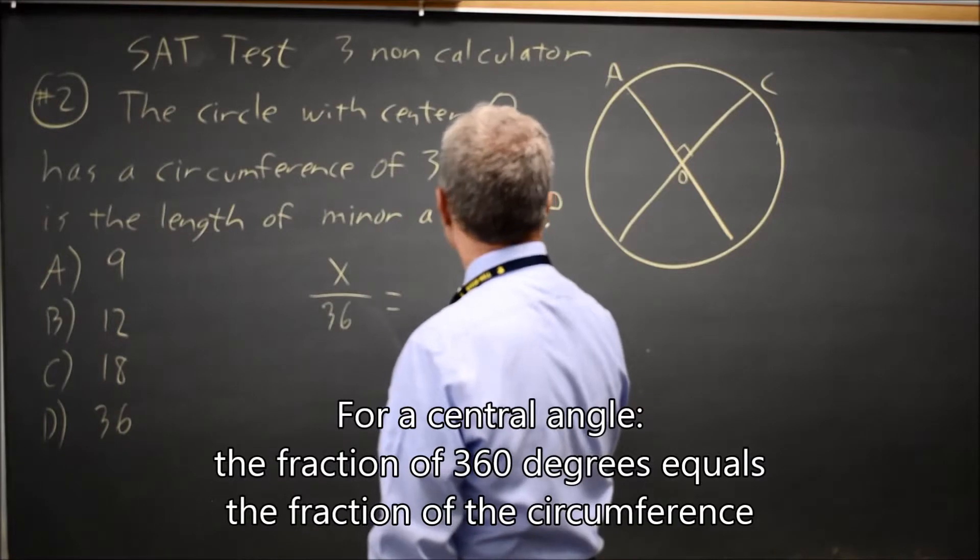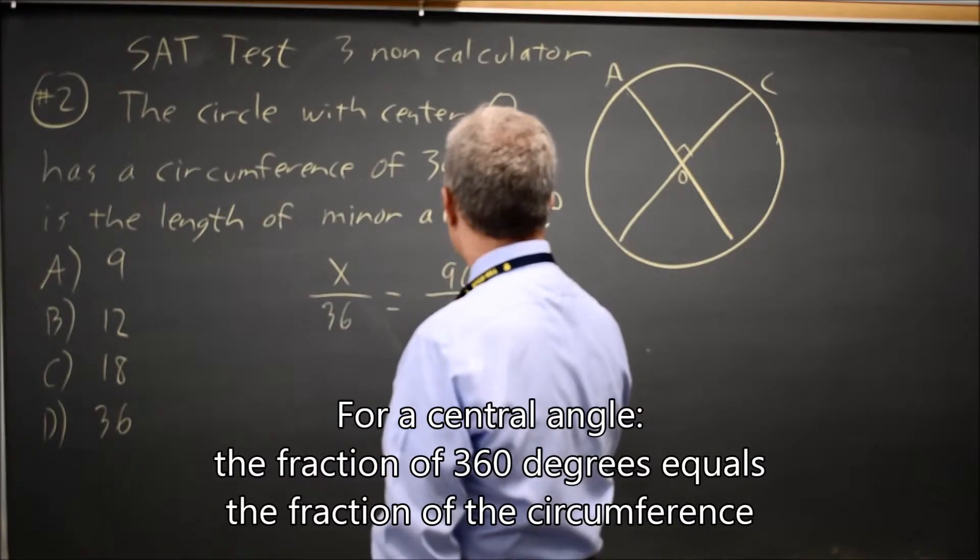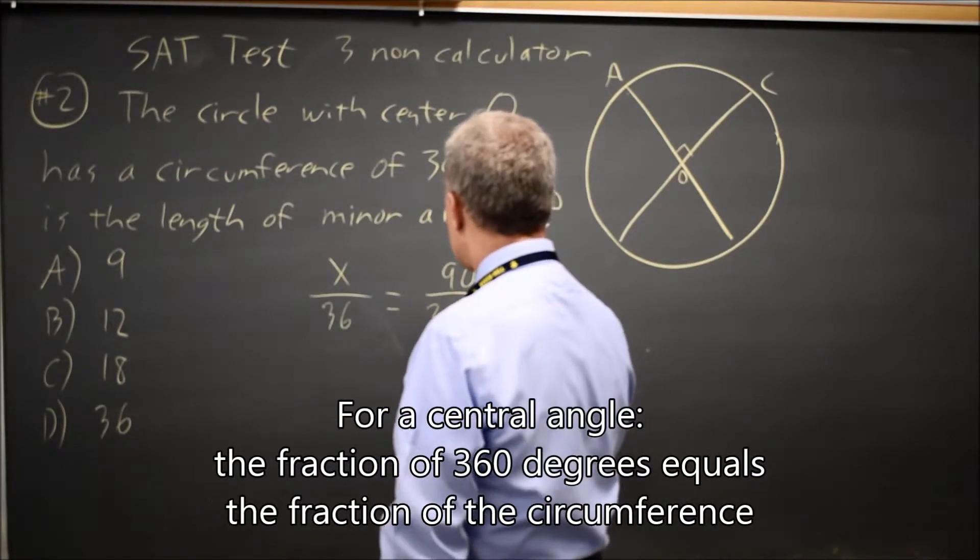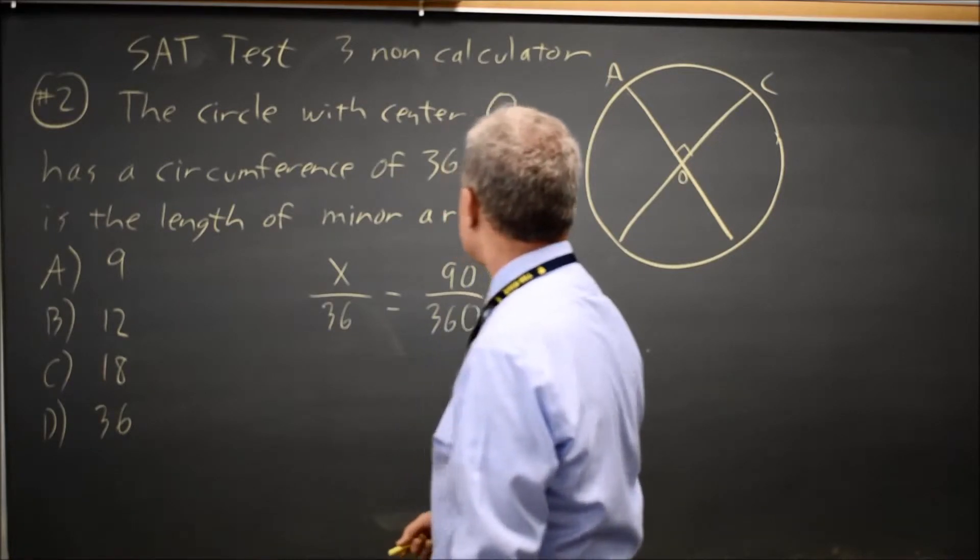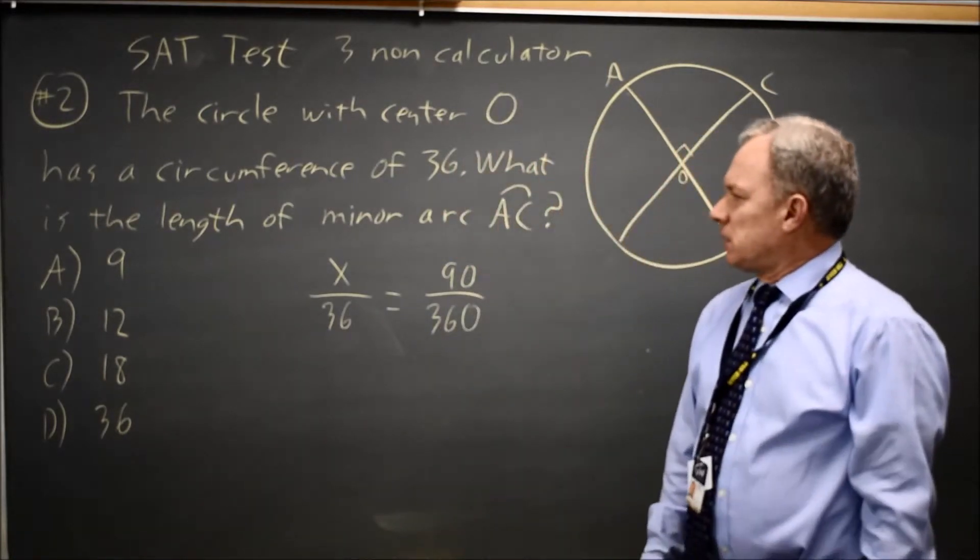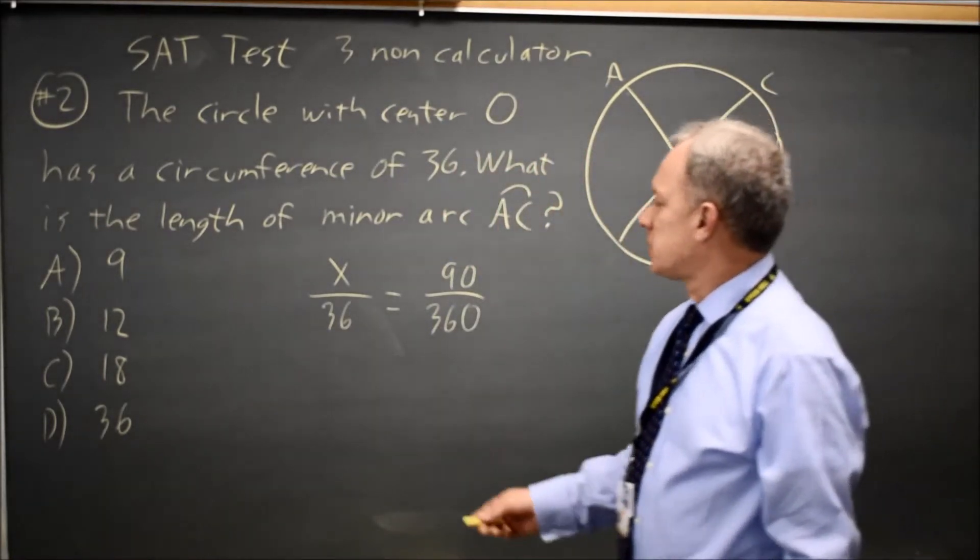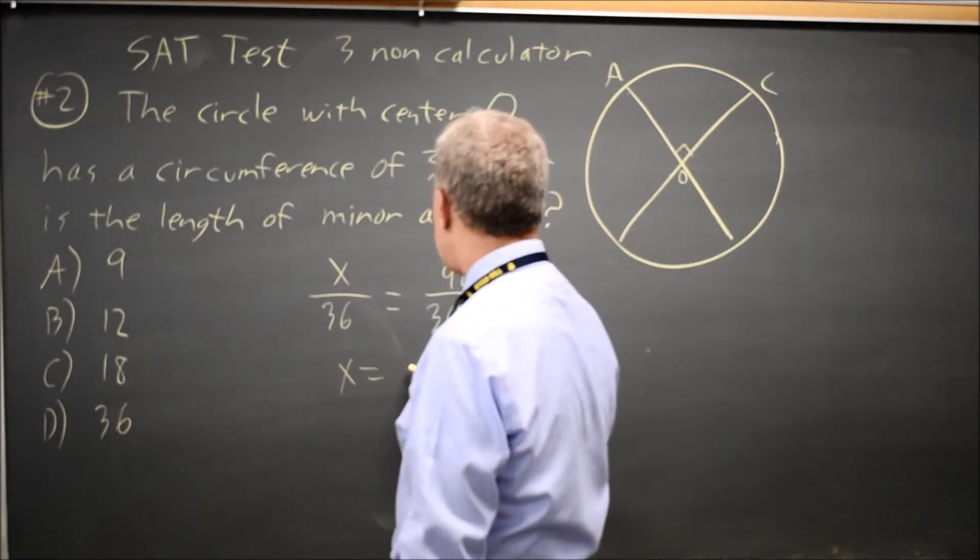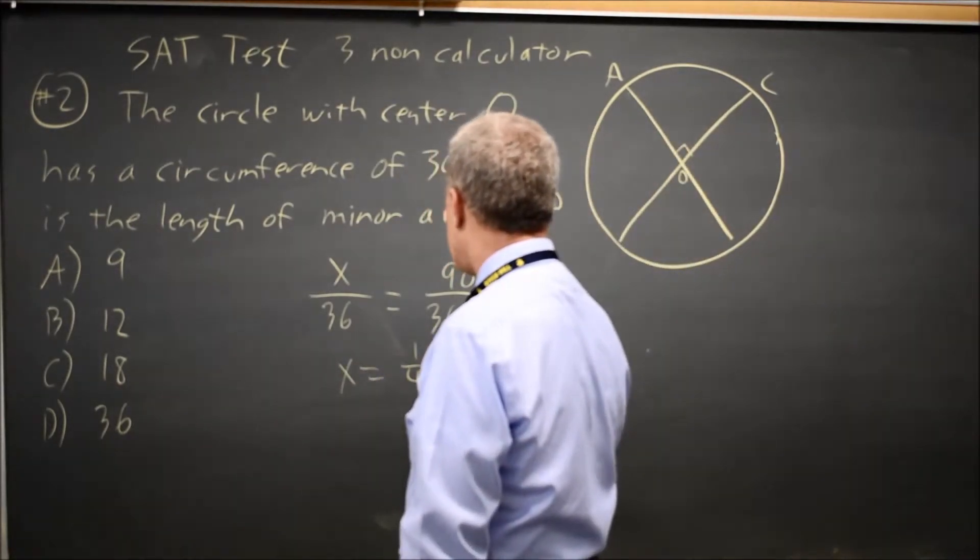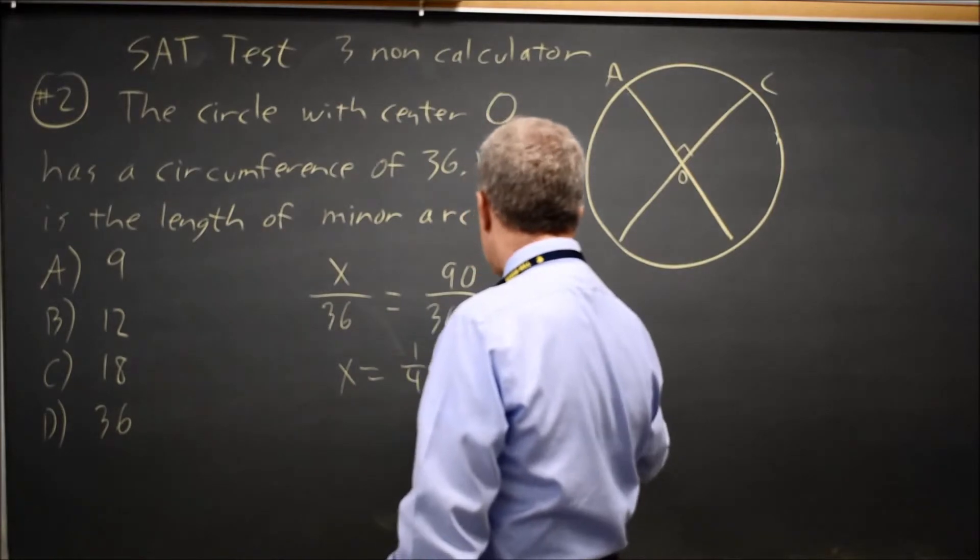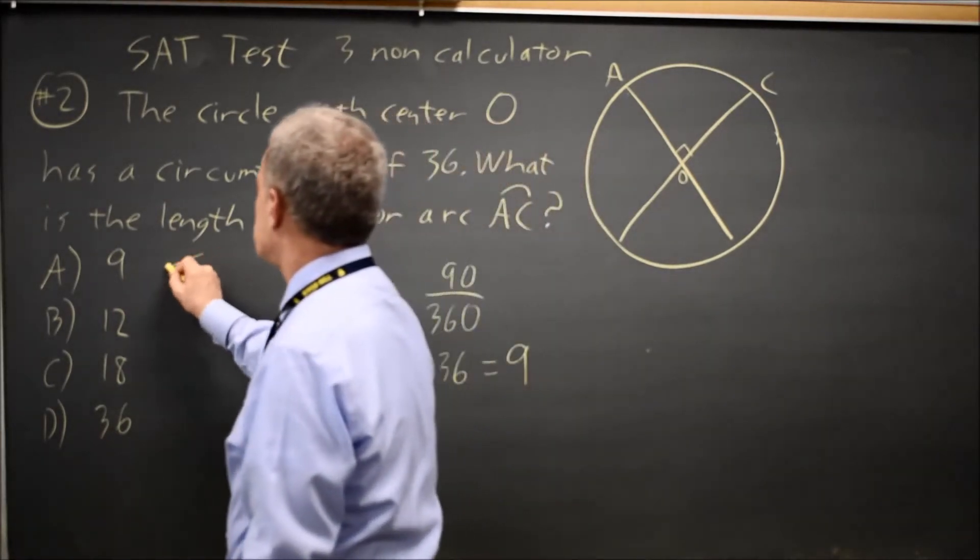The angle is 90 degrees over the entire circle. A circle is 360 degrees. And this simplifies to x equals 90 over 360, which is one-fourth of 36, equals 9, which would be choice A.